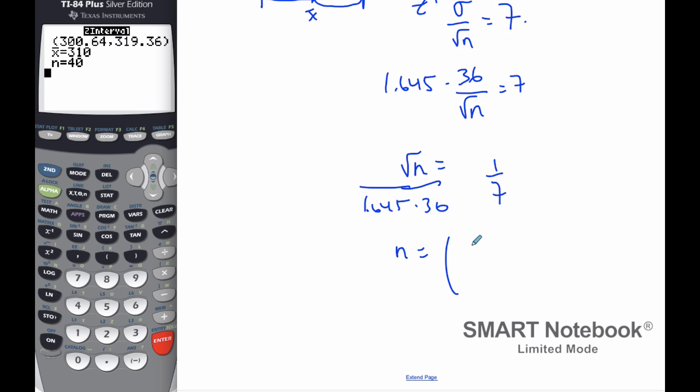And so n will be 1.645 times 36 over 7 squared. And if I do that calculation, which I've already done, it ends up being 71.06, but I have to round it up to 72 to make sure it is at least 7 milligrams.